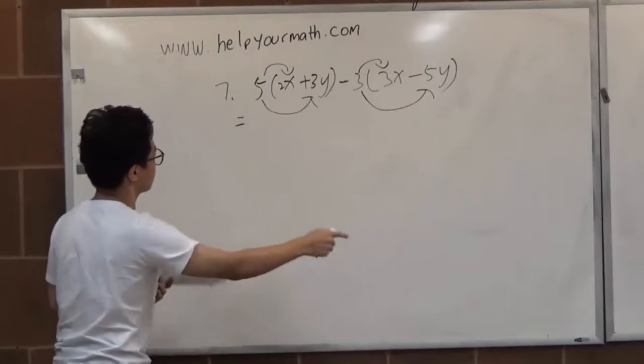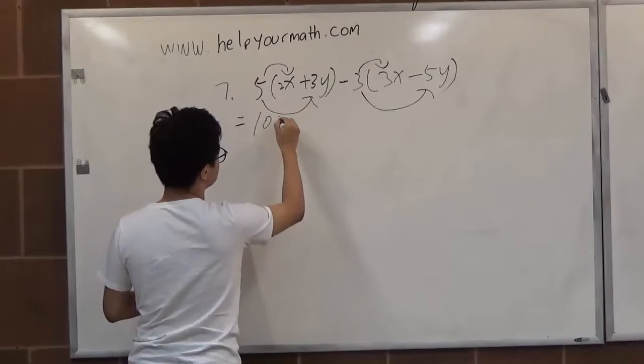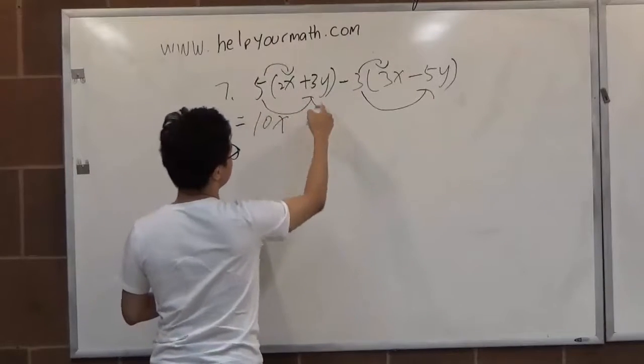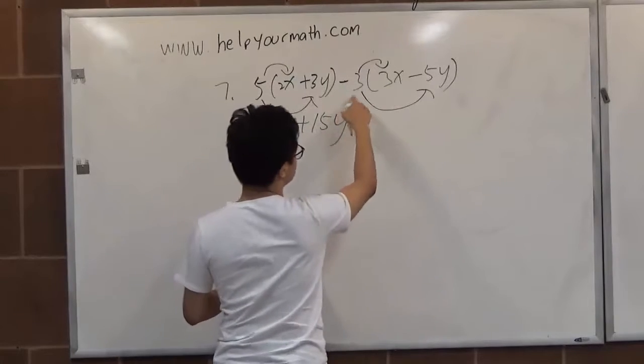We just do the math. 5 times 2x is 10x, and 5 times 3y is 15y.